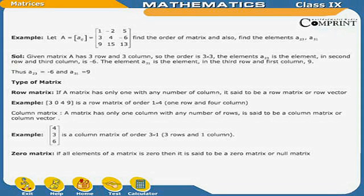Types of matrix. Row matrix: If a matrix has only one row with any number of columns, it is said to be a row matrix or row vector. For example, the matrix [3, 0, 4, 9] is a row matrix of order 1 by 4. It has one row and four columns.